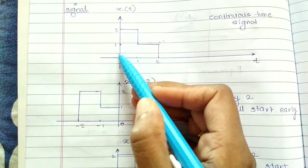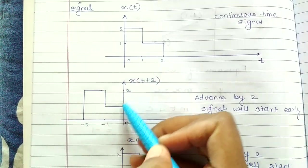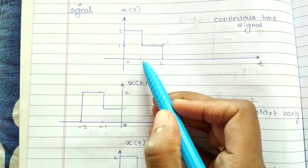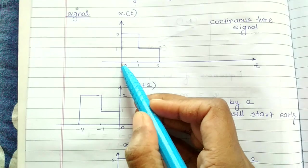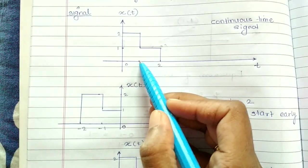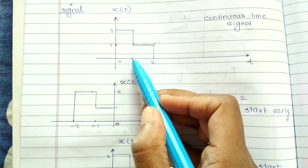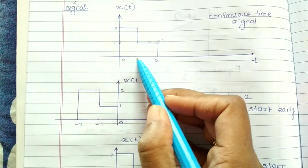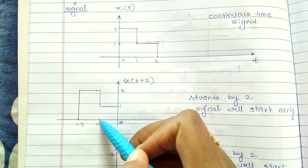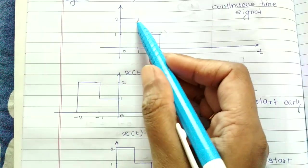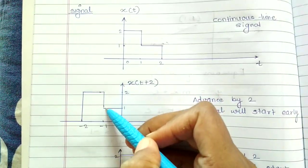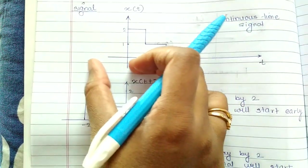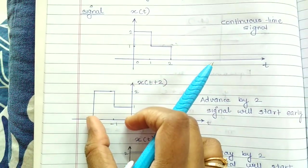Once you get the leading edge, simply draw the entire signal as it is in X(t). Alternatively, after plotting the amplitude at zero, go for the amplitude at one. Whatever is the amplitude at one will reflect at one minus two, which is minus one. So whatever the shape is at one will now appear at minus one, and so on. So this entire signal is now left-shifted by two units.